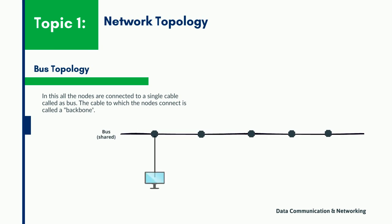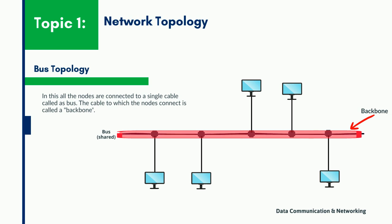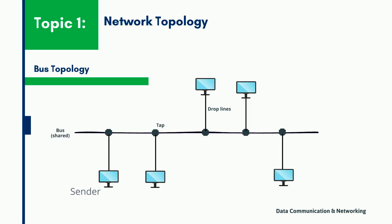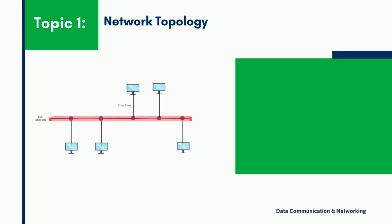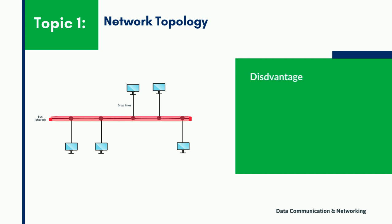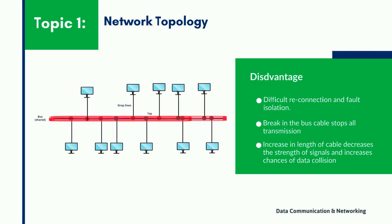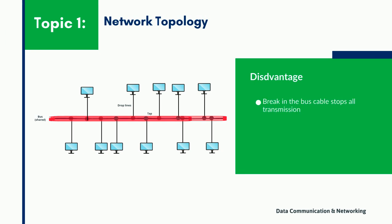In the bus topology, nodes are connected to the bus cable, which is also called the backbone, and this backbone connects the nodes by drop lines and taps. A drop line is a connection running between the device and the main cable through a tap. If one device wants to send data to another, all the devices connected with the shared backbone will also receive the data — meaning the data is broadcasted. However, the data is only accepted by the intended device and the rest will discard it. Compared to mesh topology, bus topology is quite easy to install and requires very less cabling. However, adding nodes increases the length of the cable, which decreases signal strength and increases the chance of data collision. Also, a fault or break in the bus cable stops all transmission, even between devices on the same side of the problem.